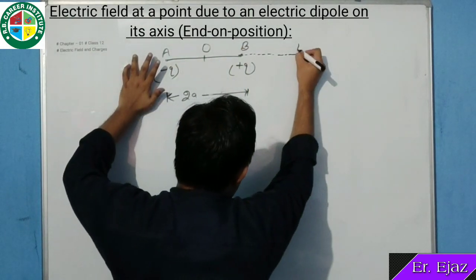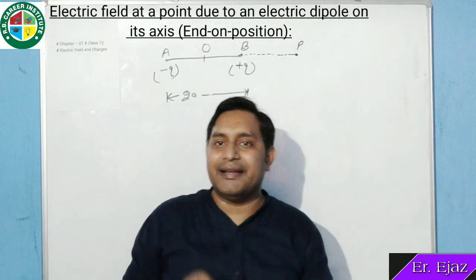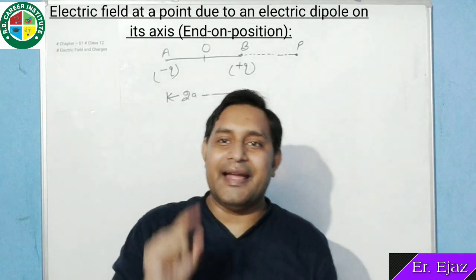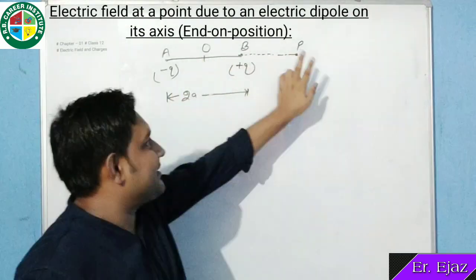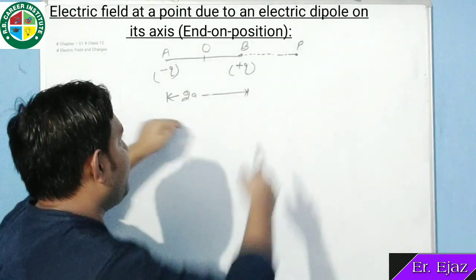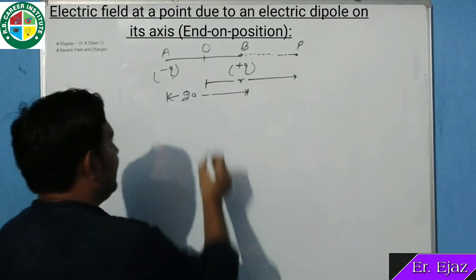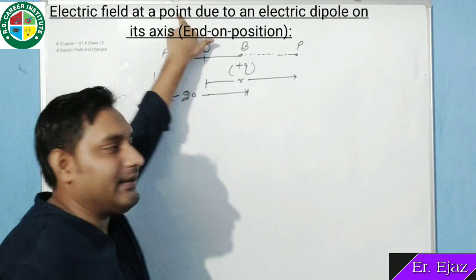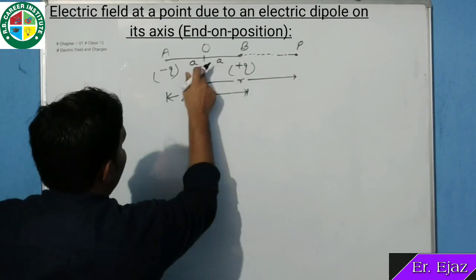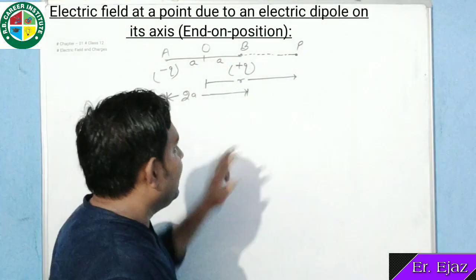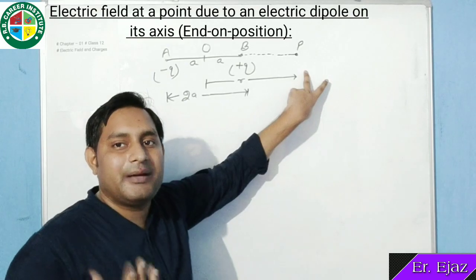Suppose हमारा यह electric dipole है और इससे कुछ दूर point P consider किया। Point P पर कितना electric field होगा, यह calculate करना है। Electric field at a point due to an electric dipole on its axis — point P midpoint O से distance R पर है। Dipole moment P consider किया, distance 2A है, तो midpoint से OA और OB दोनों = A हैं।